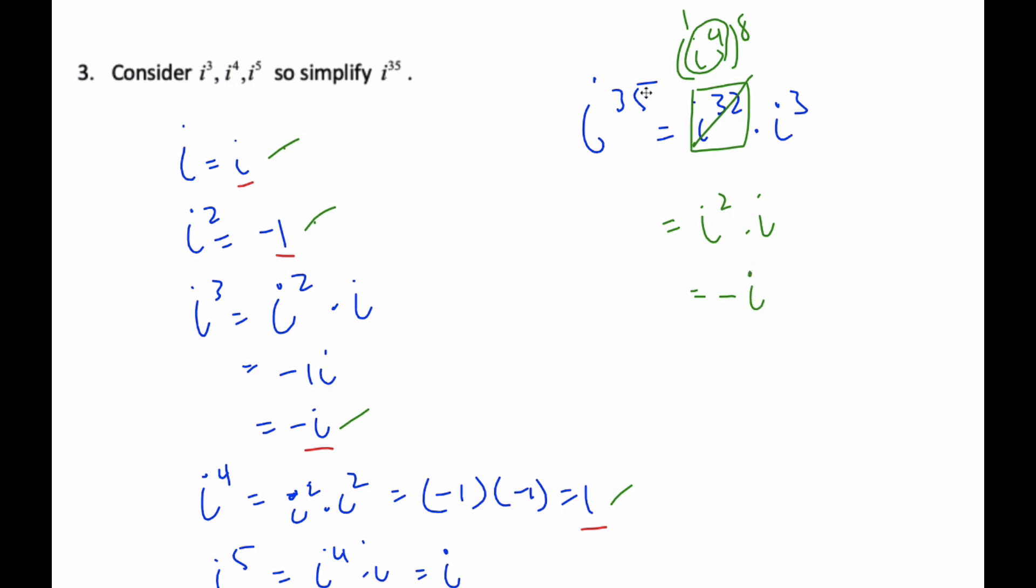And so in order to find these big powers to the power of i, I look, I divide by four, so I get 32, I get eight times four is 32, with three extra. All these ones to the power of four become one, and I'm left with this remainder of power, which then I simplify based upon the pattern here.